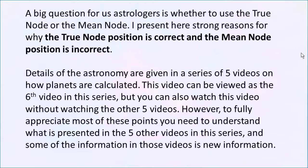It's that simple, and that can sound politically incorrect — like emphasizing this is right and that's wrong sounds arrogant or inflexible. But 2 plus 2 equals 4, does not equal 5. There are certain situations in life where something's right and something else is wrong. I present that in detail in the five videos. In this sixth video I want to summarize clearly and simply why the true node is the correct node.